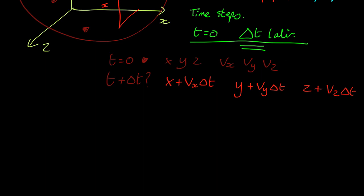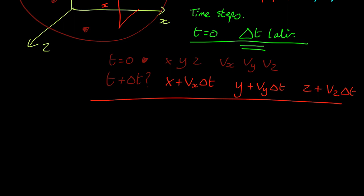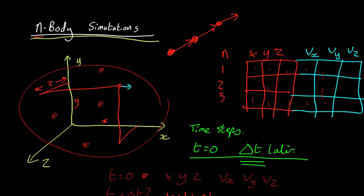Now if there was no gravity, that's all you'd need. Every particle would just keep on moving in a straight line. But there is gravity. What that's going to mean is that the velocities are going to change. So take, for example, this particle here.